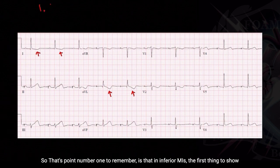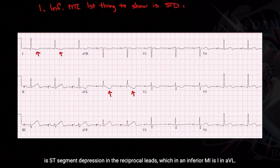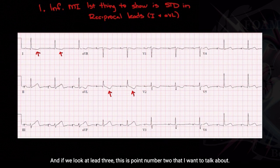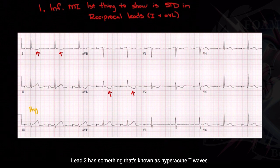Point number one to remember: in inferior MIs, the first thing to show is ST segment depression in the reciprocal leads, which in an inferior MI are Lead I and aVL. When we see this as providers, it should draw our attention to the inferior leads. If we look at Lead III, that brings us to point number two.